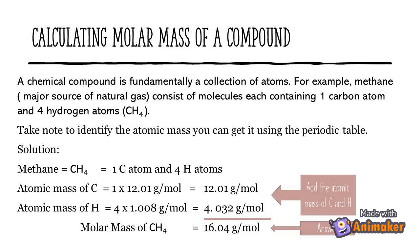Solution: methane has one carbon atom and four hydrogen atoms. Atomic mass of carbon: 1 × 12.01 g/mol = 12.01 g/mol. Atomic mass of hydrogen: 4 × 1.008 g/mol = 4.032 g/mol. So the molar mass of methane is equal to 16.04 grams per mole.